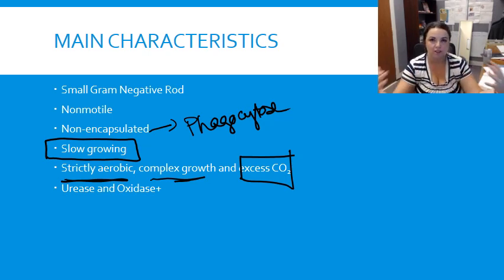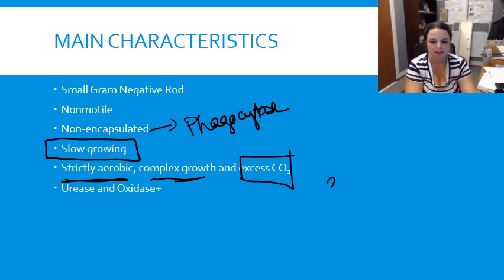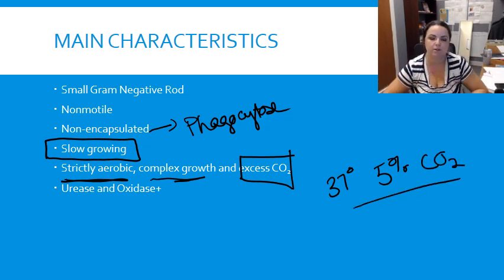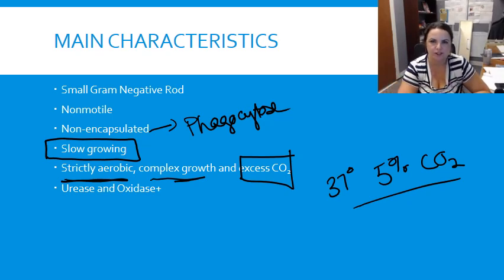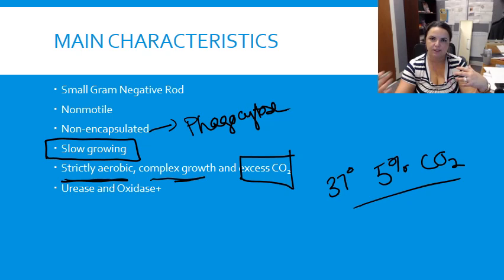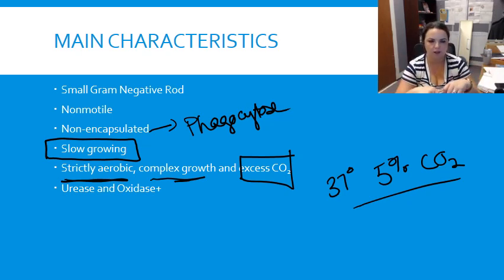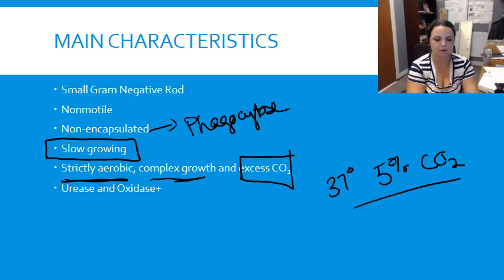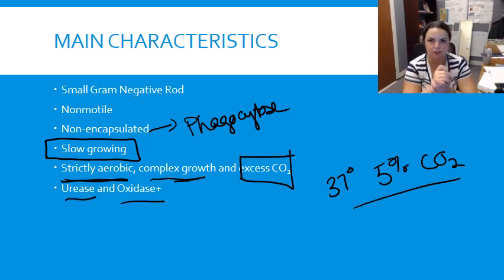Most incubators in the lab are set at about 37 degrees and about 5% CO2 — normally the conditions most bacteria are happy at. Brucella actually requires a higher percentage of CO2. So not only is it going to grow slowly, but it needs different growth conditions than many other bacteria. It does have biochemical test readouts helpful for identification: namely urease and oxidase, for which it is positive.